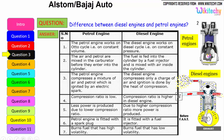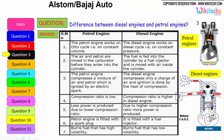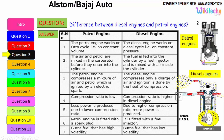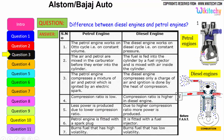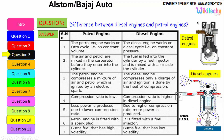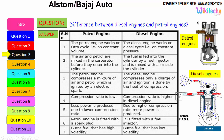The petrol engine compresses a mixture of air and petrol which is ignited by an electrical spark. The diesel engine compresses only a charge of air and ignition is done by the heat of compression. In the petrol engine the compression ratio is low, whereas in the diesel engine the compression ratio is higher — and higher compression ratio produces more power. The petrol engine is fitted with a spark plug, whereas the diesel engine is fitted with a fuel injector.